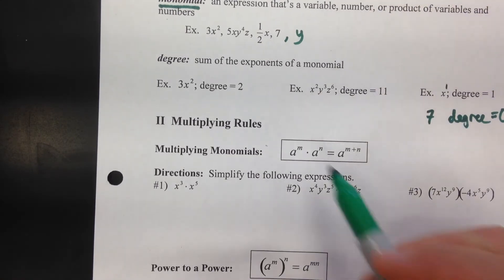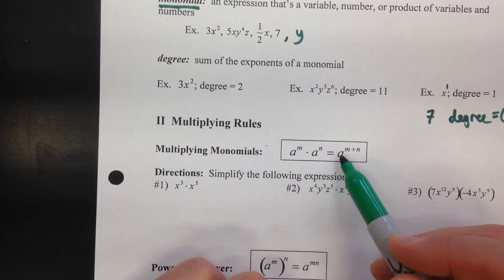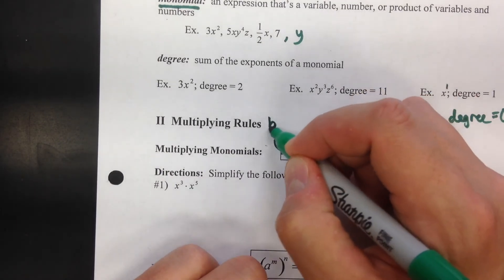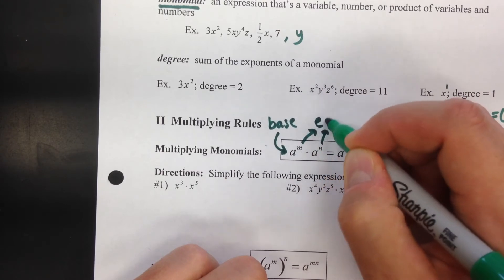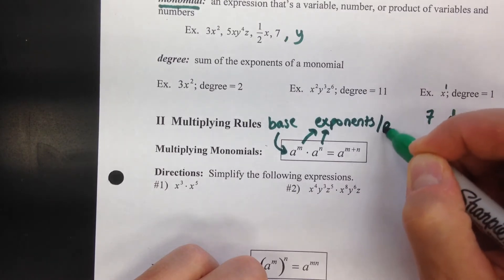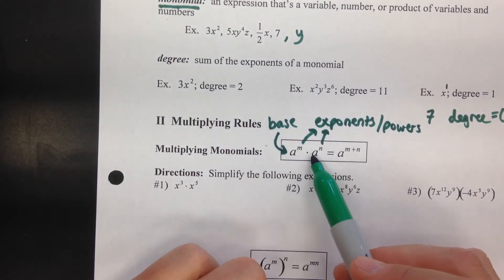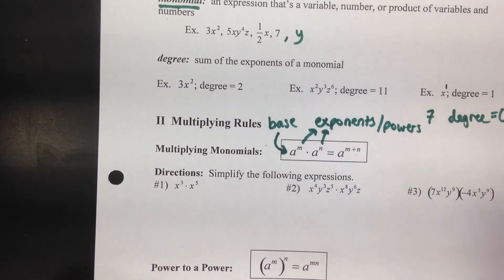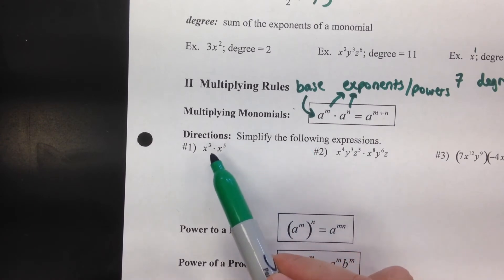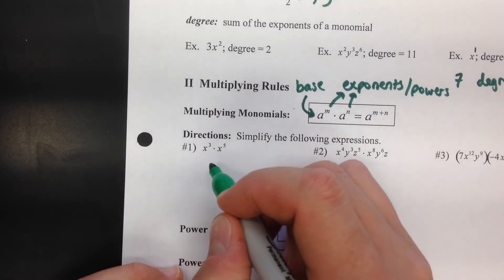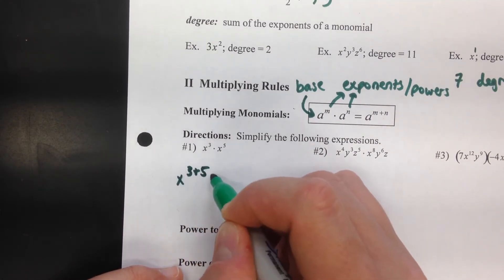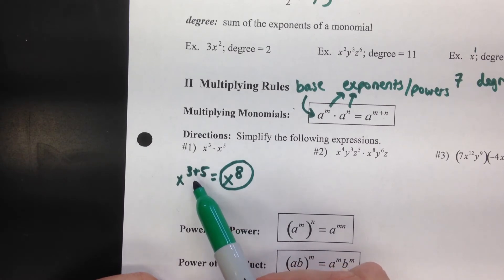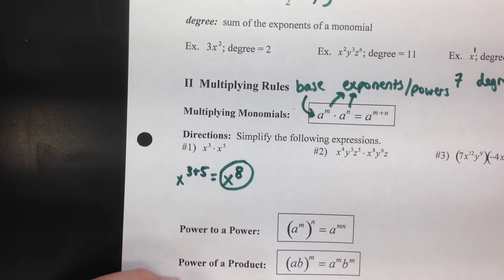Now the rules. We'll start with multiplication: when you multiply monomials the general rule is you add the exponents — a to the m times a to the n equals a to the m plus n. The letter a is the base (it could be a number or variable), and m and n are the exponents. So when you multiply variables with the same base, keep the base and add the exponents. For example, x to the third times x to the fifth equals x to the 3 plus 5, which is x to the eighth.